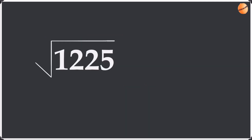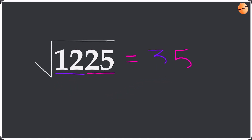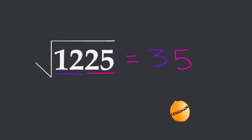Our next example is 1225. Again we do the same thing — find the square root of 25, which gives us 5. Then we find the consecutive factors of 12, which are 3 and 4. We choose the smaller one out of the pair, which is 3, and write it in front of the 5. So we get an answer of 35. To recap: find the square root of 25 to get 5, then find the consecutive factors of 12, which are 3 and 4, choose the smaller one to get 35.